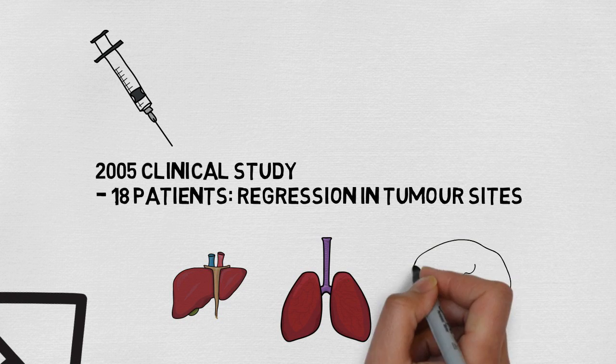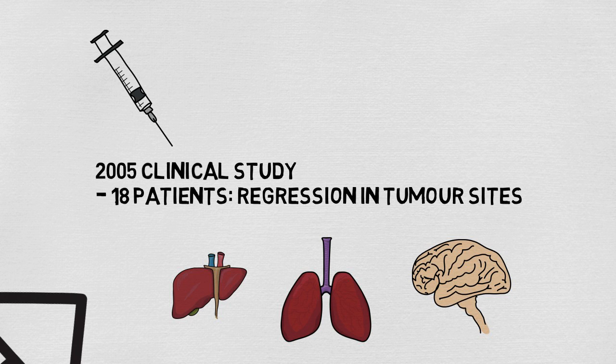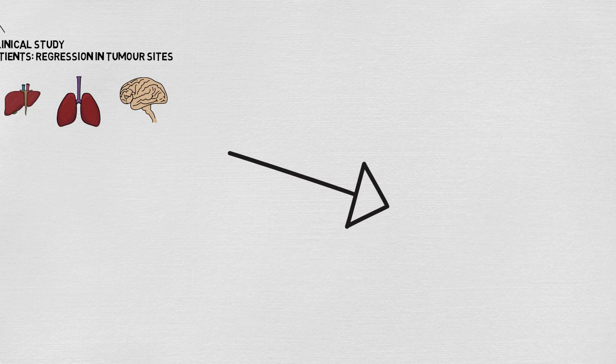These sites included lung, liver, and brain, among others. These patients had previously undergone heavy treatment with other methods of cancer treatments with no reduction of their tumors, which led the group to believe that this is a promising result.